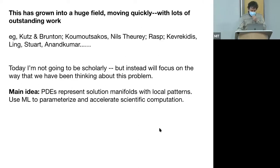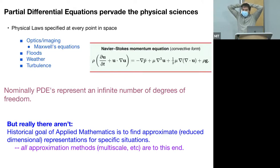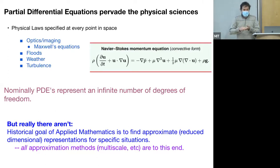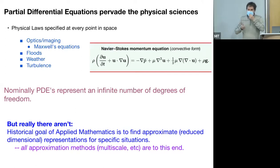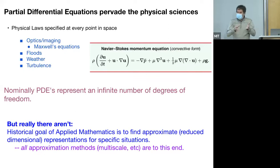Partial differential equations pervade the physical sciences. We tell our students: first you solve ODEs, then more ODEs, then you get to PDEs where there's an ODE at every point in space—so PDEs have an infinite number of degrees of freedom. But we can't solve an infinite number of degrees of freedom computationally. For any dynamical system, even a complicated one, the solution manifold is somehow finite dimensional.